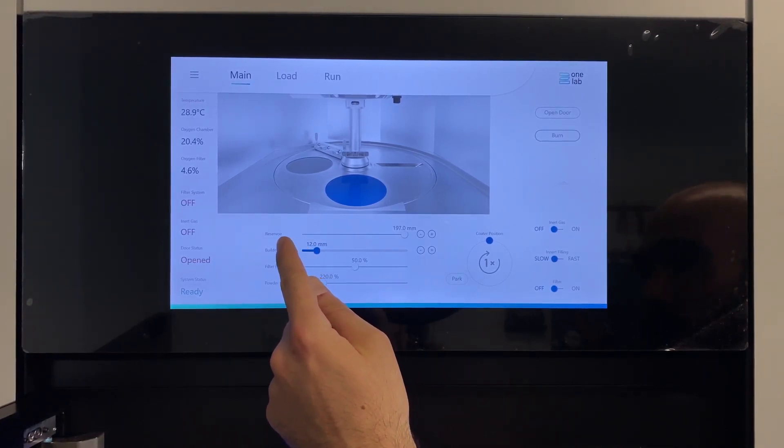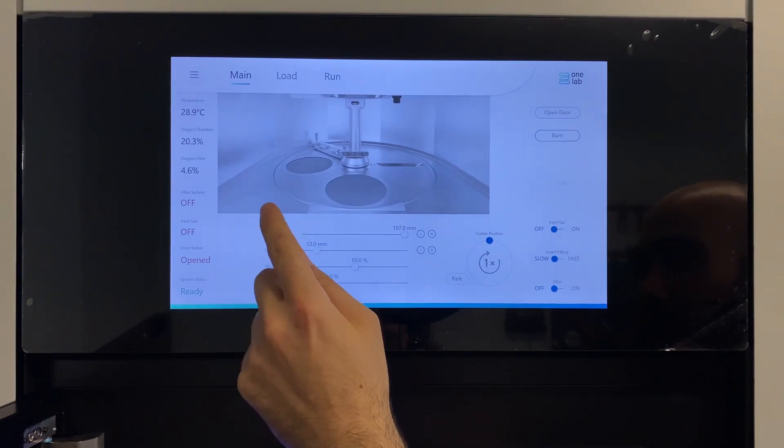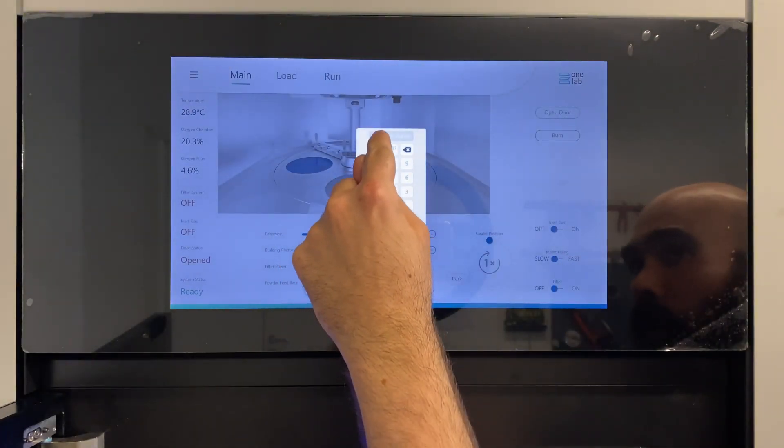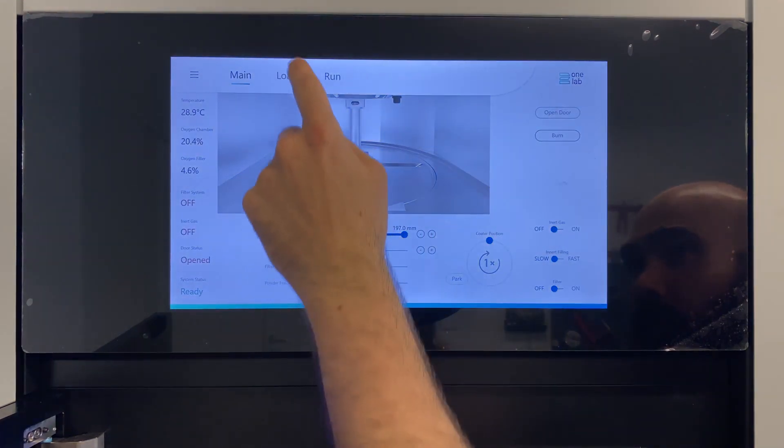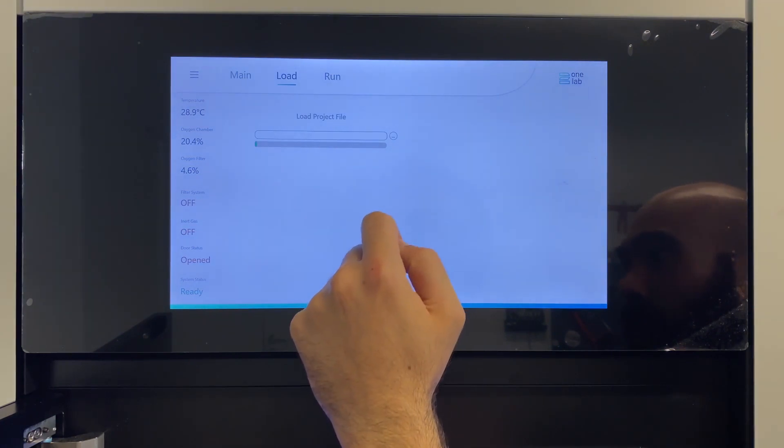Before we fill in the powder, we need to know how much powder we need. For this, we have the reservoir and we can double click on it and do an auto-calculation to know how much powder we need. But before, we need to load our job, so we need to know the height of the building project.